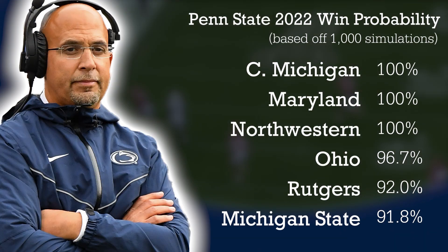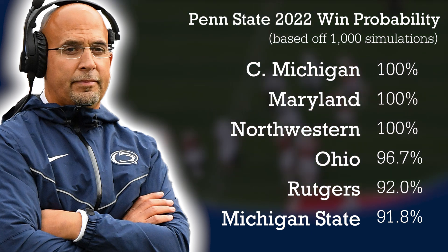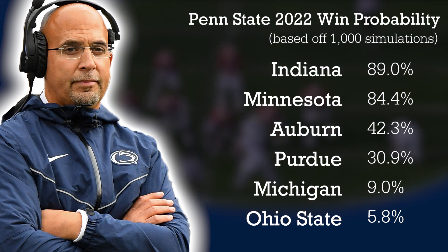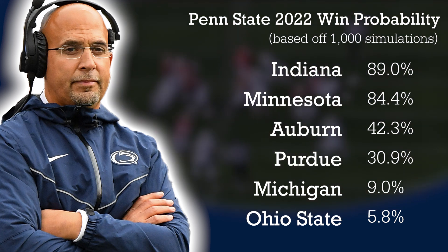The four projected losses are Purdue, Auburn, Michigan, and Ohio State. On Purdue — I give Penn State a 30% chance of beating them, but it's very close, within a point and a half. Auburn I give them 42.3% — that's within 0.5 points on average, again within the home field average swing. Michigan they have a 9% chance to beat — projected to lose by nearly a touchdown. And Ohio State we shall not talk about right now.